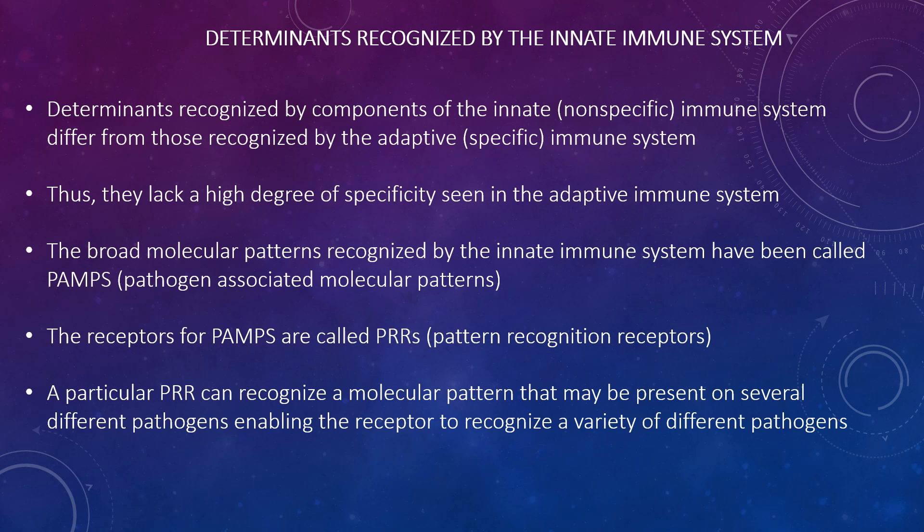Determinants recognised by components of the innate immune system differ from those recognised by the adaptive immune system. Antibodies and B- and T-cell receptors recognise discrete determinants with a high degree of specificity, enabling the adaptive immune system to react to a particular pathogen. In contrast, components of the innate immune system recognise broad molecular patterns found in pathogens but not in the host, and thus lack the high degree of specificity seen in the adaptive immune system. These broad molecular patterns are called PAMPs — pathogen-associated molecular patterns — and their receptors are called pattern recognition receptors (PRRs). A particular PRR can recognise a molecular pattern present on a number of different pathogens, enabling it to recognise a variety of pathogens.